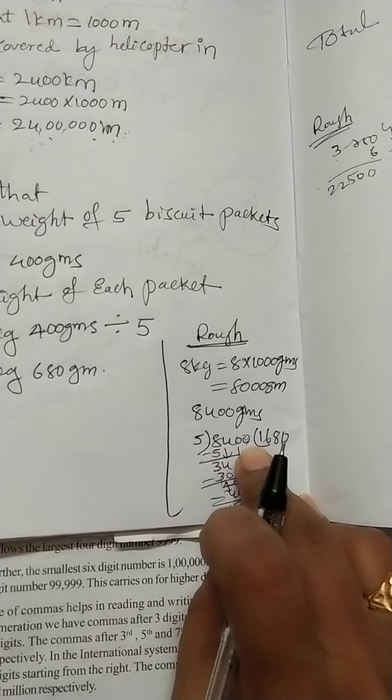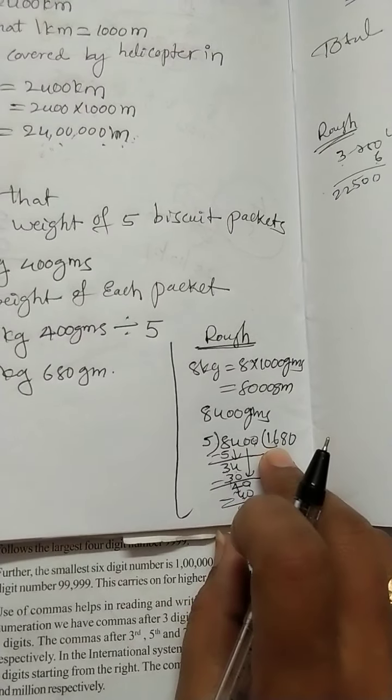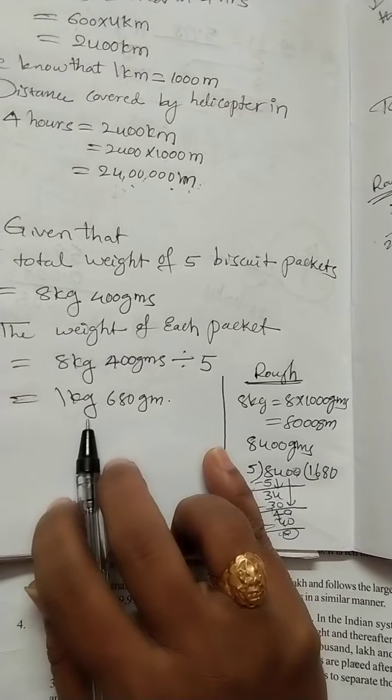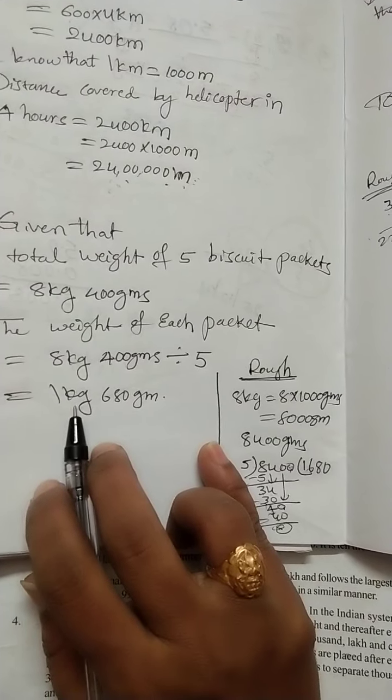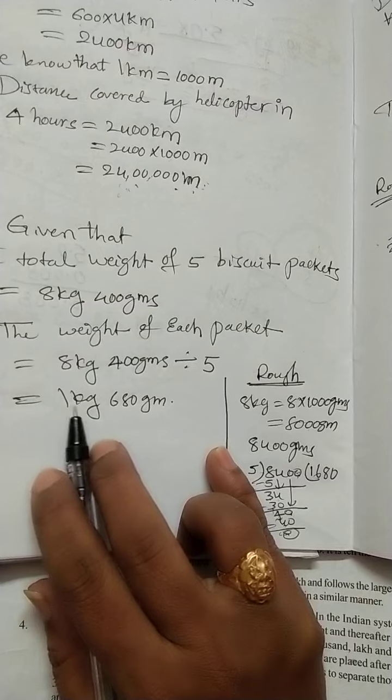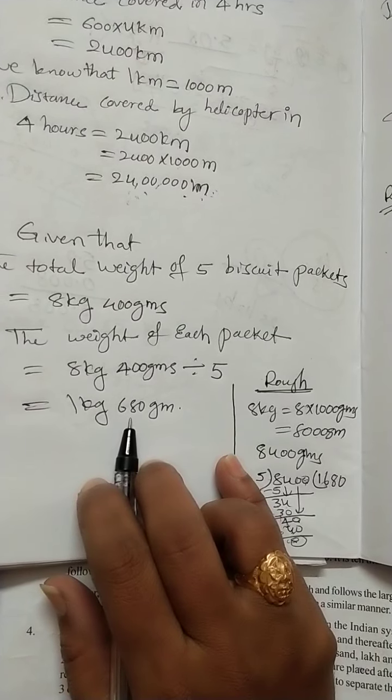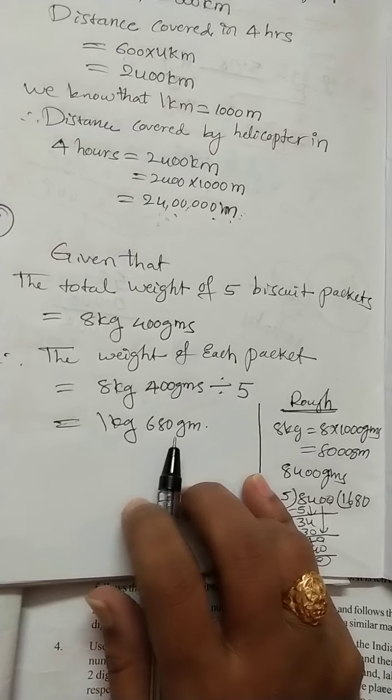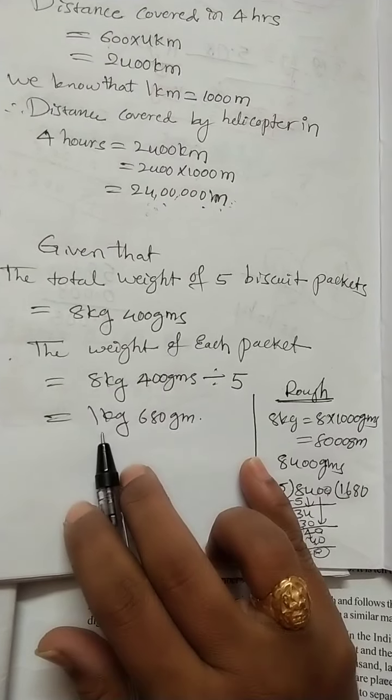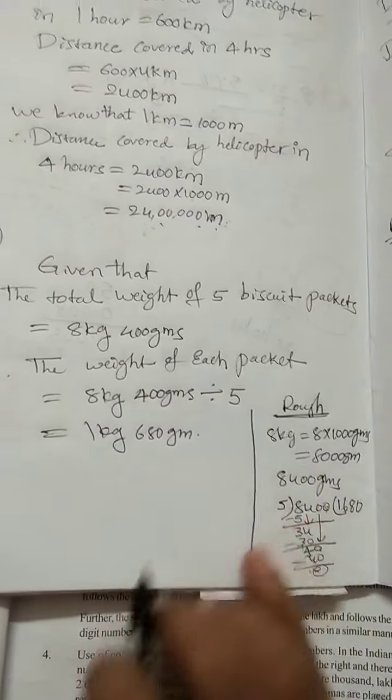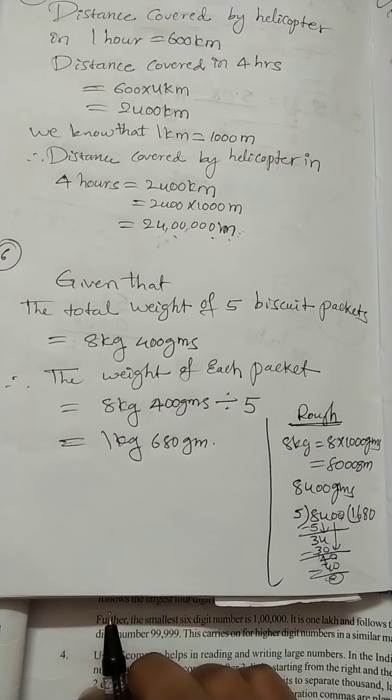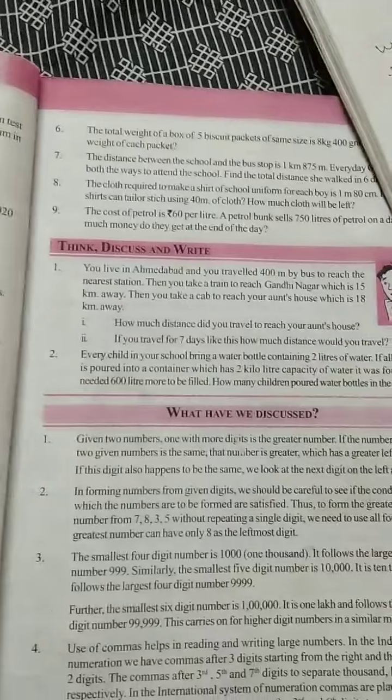We got 1680 grams. We can convert this: 1000 grams means 1 kg, and remaining is 680 grams. The weight of each biscuit packet is 1 kg 680 grams. This is the answer for the 6th question.